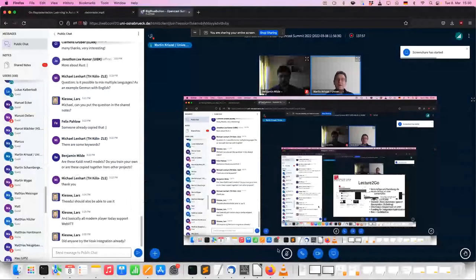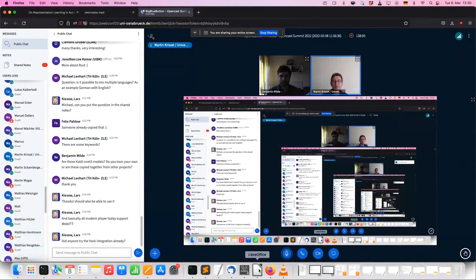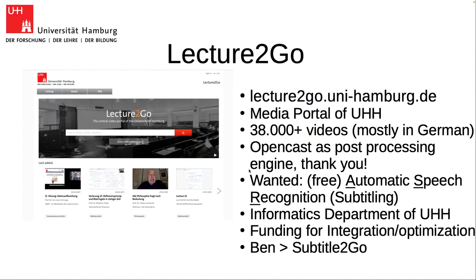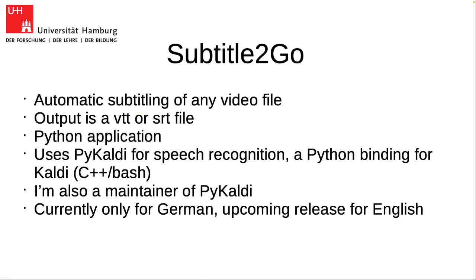Maybe we can finally give something back to the community. Ben will give you a brief overview of Subtitle-to-Go. Hi, thanks for the introduction Martin. So there's probably a lot of overlap with the last talk. What we did is basically build an automatic subtitling solution that works on any video file. This is not yet a part of OpenCast, but there are a couple of differences and things we added that could also be useful for other solutions. Like the other solution, we can generate standard VTT or SRT files.